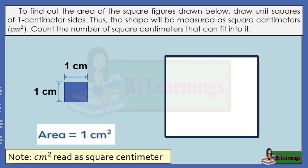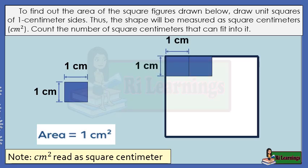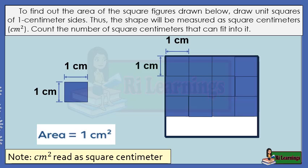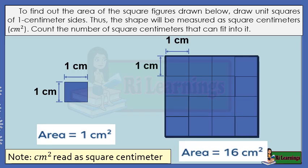To find out the area of the next square figure, let's follow the same procedure. Count the number of square centimeters that can fit into it: one, two, three, four, five, six, seven, eight, nine, ten, eleven, twelve, thirteen, fourteen, fifteen, sixteen. There are 16 squares that fit into it. The area of the square is 16 square centimeters.